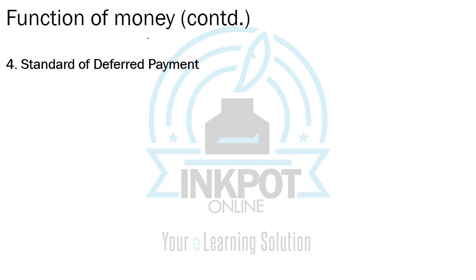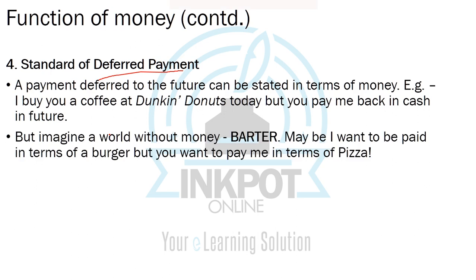The fourth function of money is that it serves as a standard of deferred payment. Consider this example: today I buy you a coffee at Dunkin' Donuts. In a barter system, I might say you should buy me a burger in return, but you say you'd rather pay in pizza, and maybe I want two burgers while you offer one pizza. You see the complexity barter brings in — and money tries to resolve that complexity.